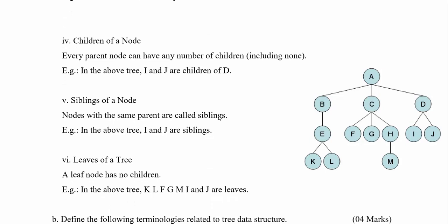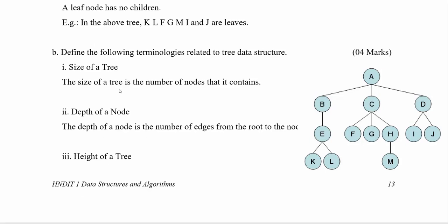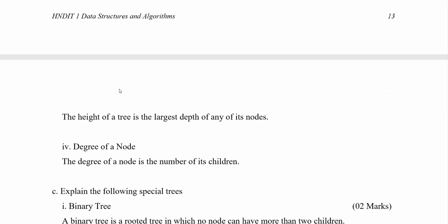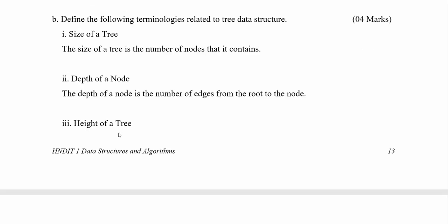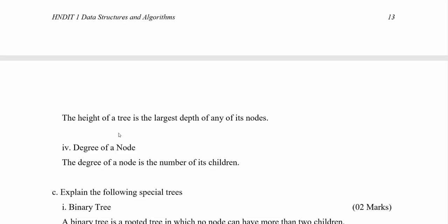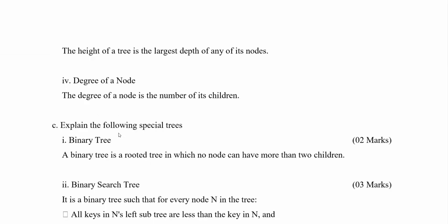Question B: define the following terminologies related to tree data structure. You have to define the size of a tree, depth of a node, height of a tree, and degree of a node. The size of the tree means the number of nodes it contains. Depth of a node means the number of edges from the root to the node. Height of a tree means the largest depth of any of its nodes. The degree of a node is the number of children which that node has.